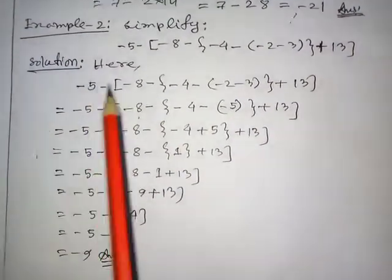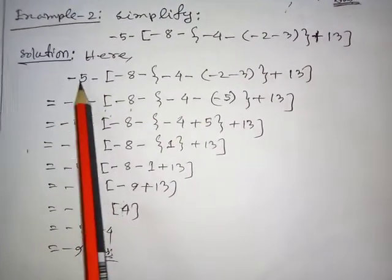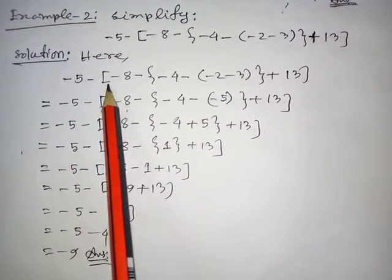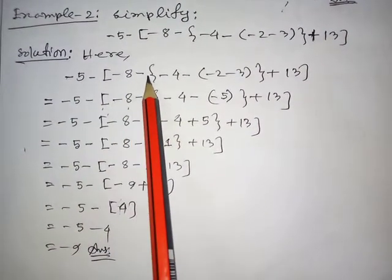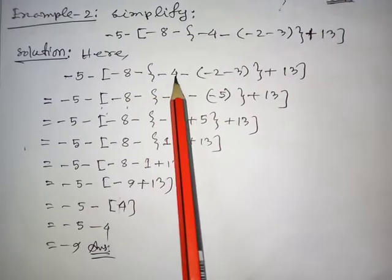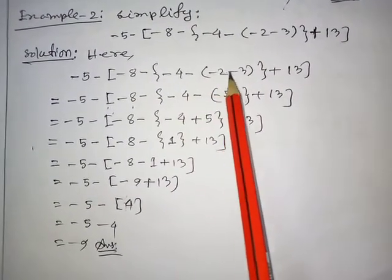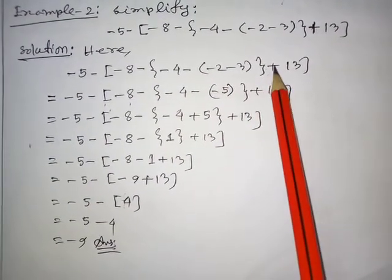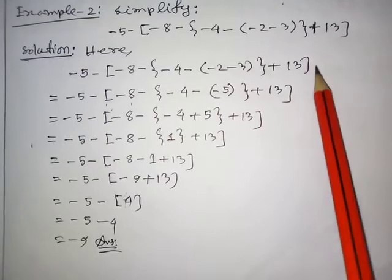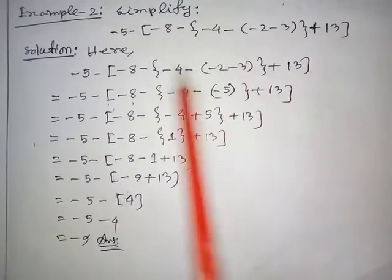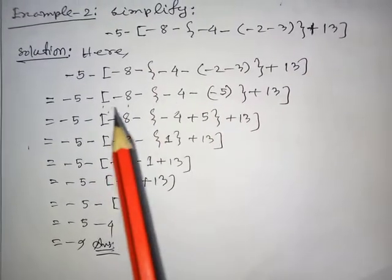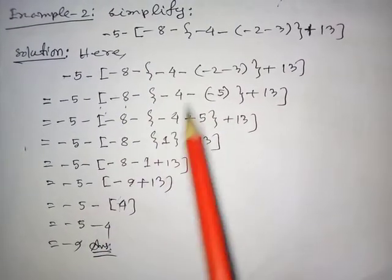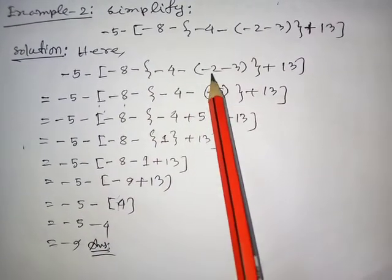Now let's choose another arithmetic expression to clarify your concept: minus 5 minus { minus 8 minus [ minus 4 minus ( minus 2 minus 3 ) ] plus 13 }. This is very close in structure to the first one.